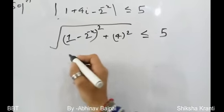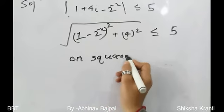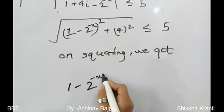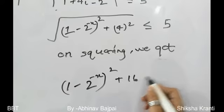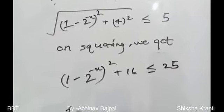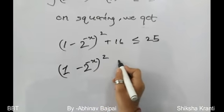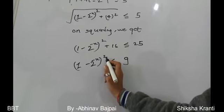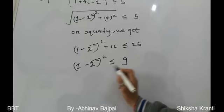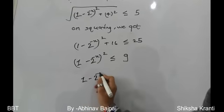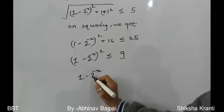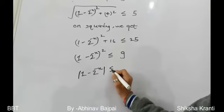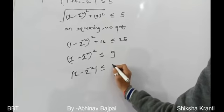Squaring both sides: (1 - 2^(-x))² + 16 ≤ 25, which gives (1 - 2^(-x))² ≤ 9. Taking the square root carefully (applying modulus): |1 - 2^(-x)| ≤ 3.